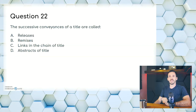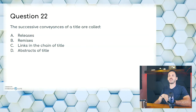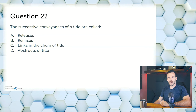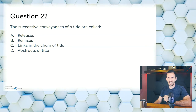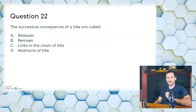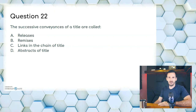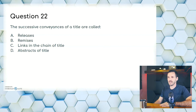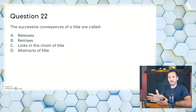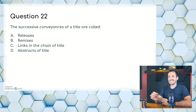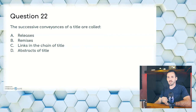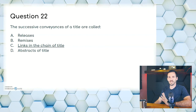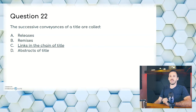Question twenty-two: the successive conveyances of a title are called — A, releases; B, remises; C, links in the chain of title; or D, abstracts of title. Option B is almost certainly not correct — never heard or used that term. The answer is C, though it may also just be called 'chain of title.' Links in the chain of title is a little different. Answer is C.